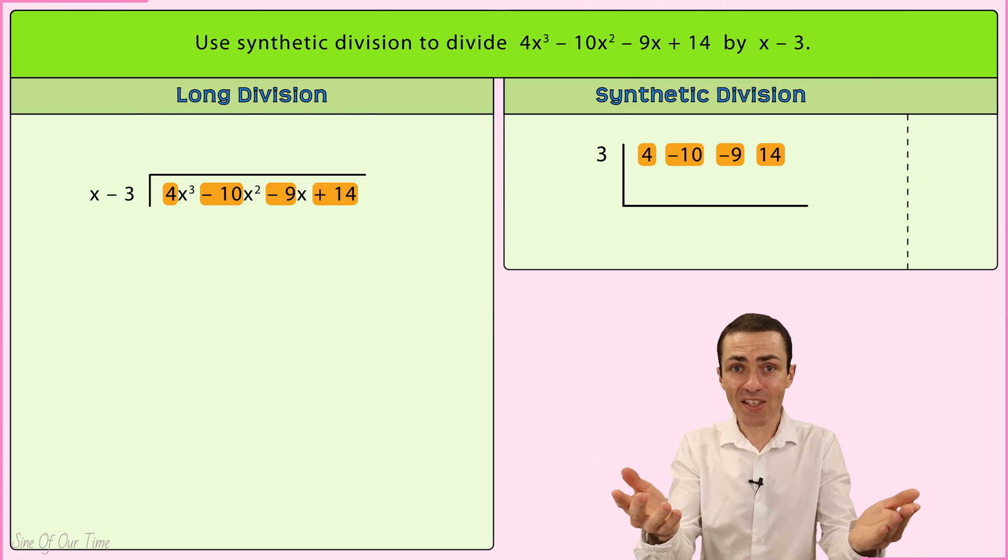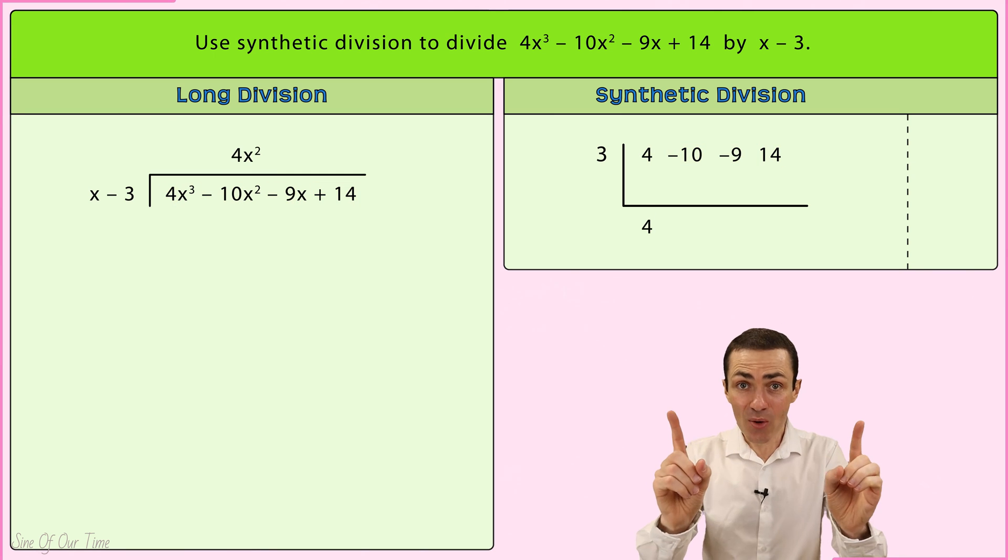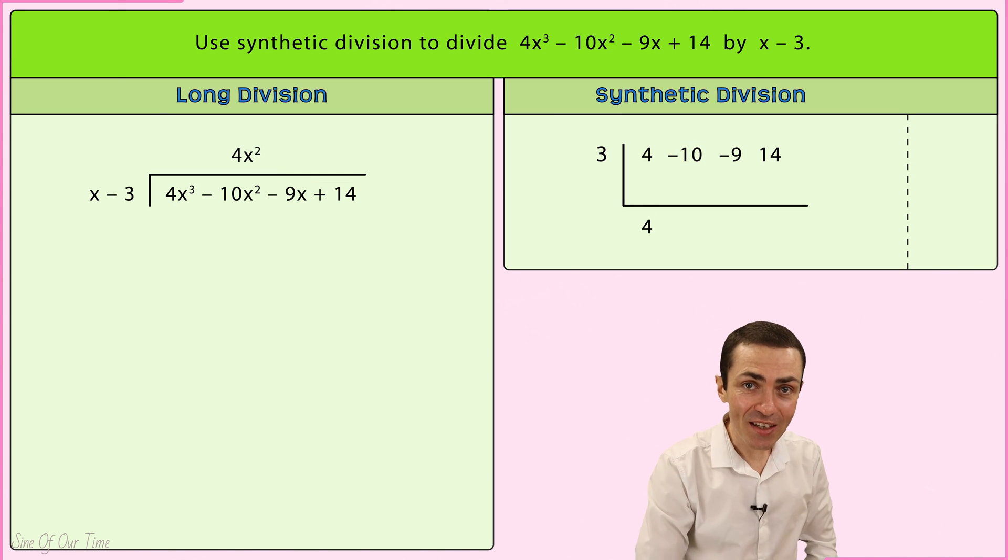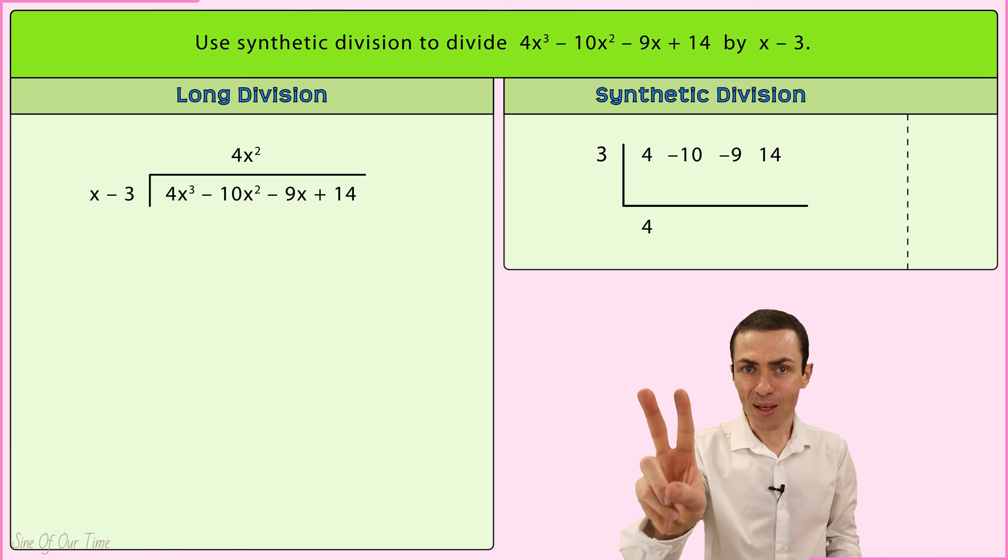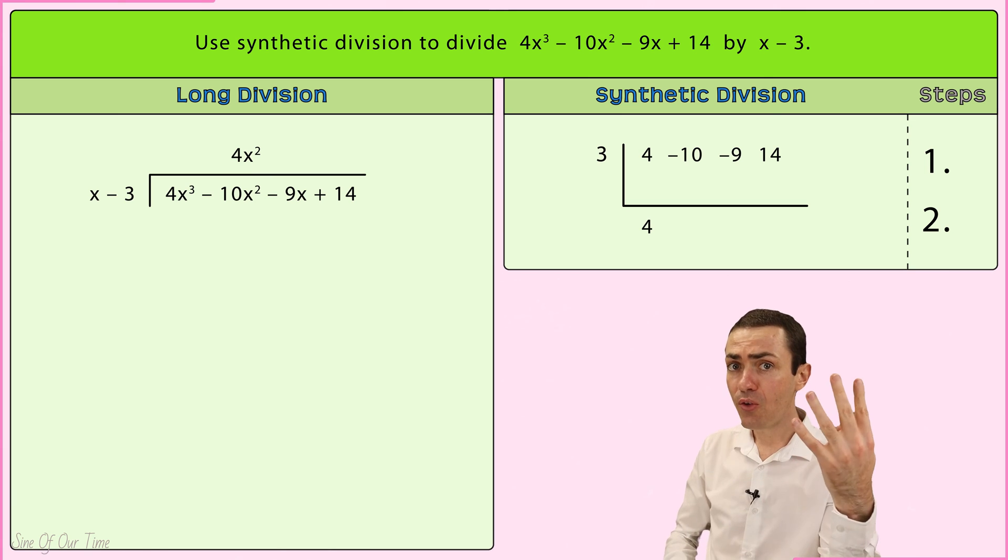To complete the setup, we take the 4 and we bring it down and we write it below the synthetic division symbol. And now we are ready to begin the synthetic division process, which only consists of 2 steps, unlike polynomial long division, which consists of 4 steps.